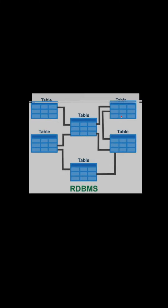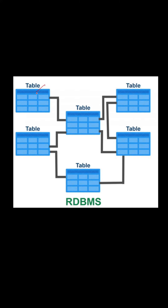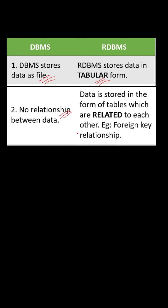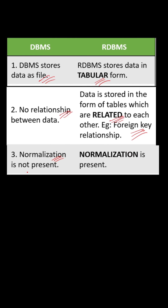In RDBMS, data is stored in tabular format and relationships are maintained. The key differences: DBMS stores data as files, RDBMS stores data in tabular format. In DBMS there is no relationship between data, whereas in RDBMS data is stored in tables which are related to each other via foreign key relationships. In DBMS, normalization is not present.